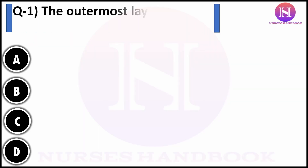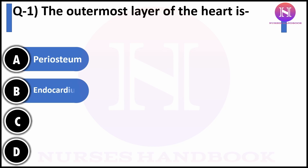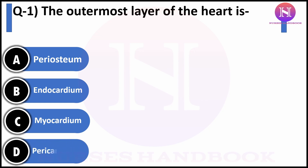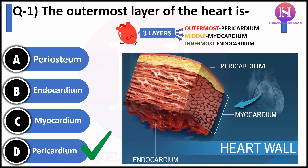Question number one: the outermost layer of the heart is — option A: periosteum, option B: endocardium, option C: myocardium, option D: pericardium. The correct answer is pericardium. Our heart consists of three layers: the outermost pericardium, the middle myocardium,